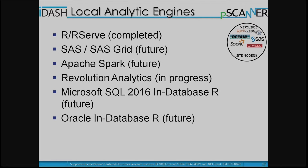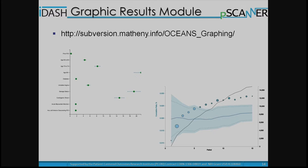We've completed the R and R Serve implementations. VA actually has a SAS grid implementation we'd really like to utilize. There's ongoing work to utilize Apache Spark and its machine learning library. Revolution Analytics is a very interesting company and we have a license to evaluate and implement an adapter for it. Microsoft SQL is coming out with an R in-database feature in its 2016 version, which is exciting — we're exploring doing analytics in-database to speed up the process. Oracle already has an in-database function being explored as well.